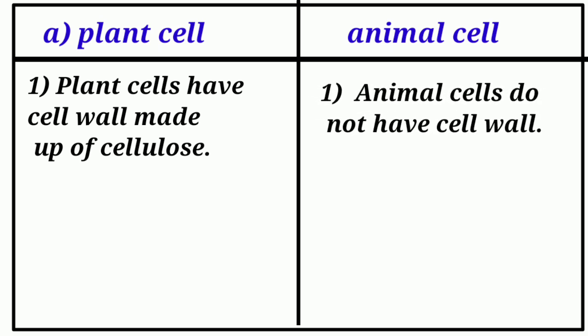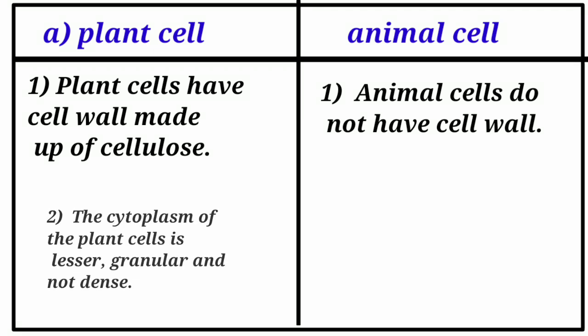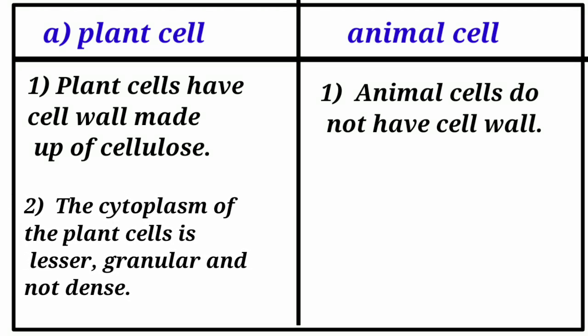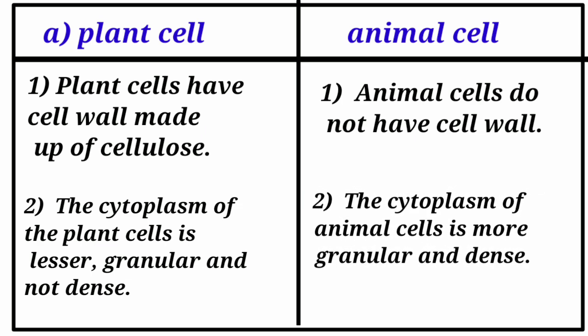Animal cells do not have cell wall. The cytoplasm of the plant cells is lesser, granular and not dense.